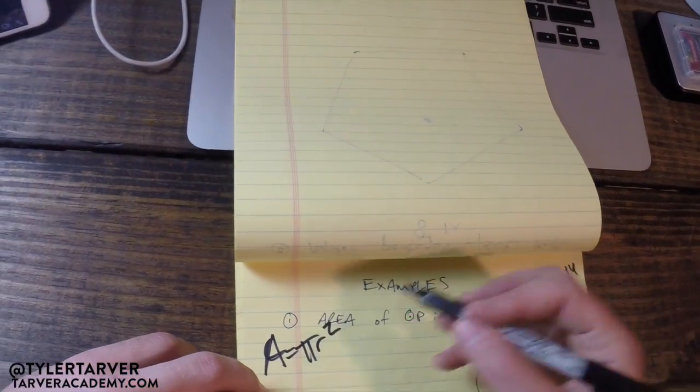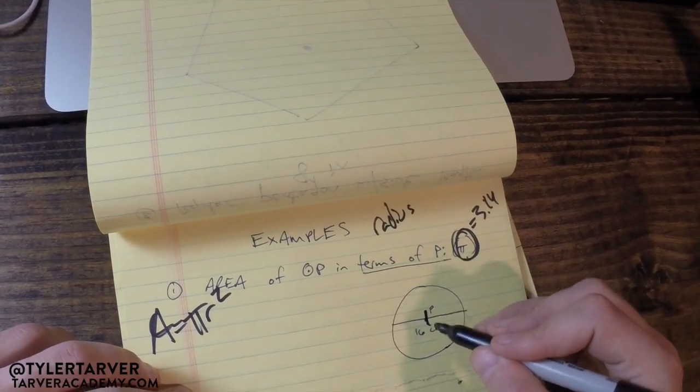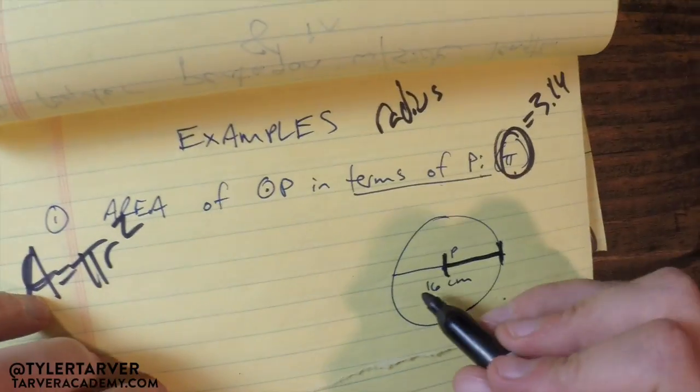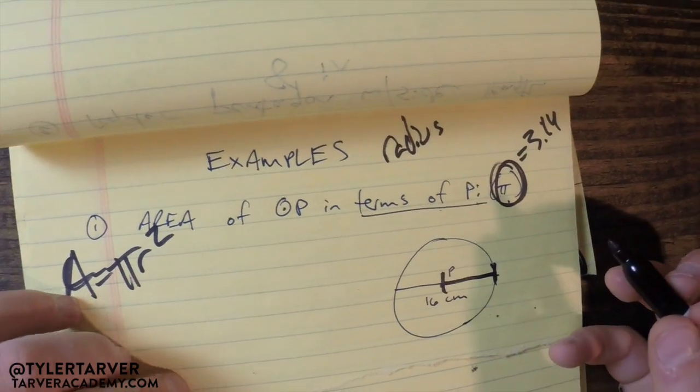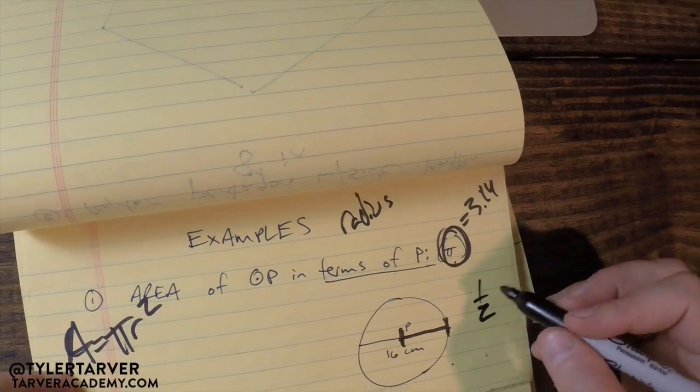So r stands for our radius, which is half of the distance from there to there. Now, we don't have half the distance, do we? No! We've got the entire distance across, which is called the diameter. So we know that the radius is exactly half of the diameter.